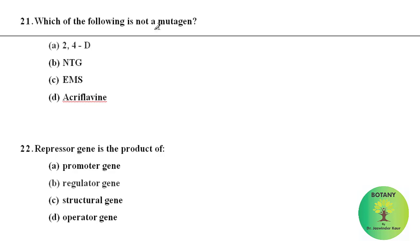Which of the following is not a mutagen? Mutagens are chemicals that cause mutations. Among the options, 2,4-D — which is 2,4-dichlorophenoxyacetic acid — is not a mutagen. NTG (N-methyl-N'-nitro-N-nitrosoguanidine) is a mutagen, EMS (ethyl methanesulfonate) is a mutagen, and acriflavin is also a mutagen.